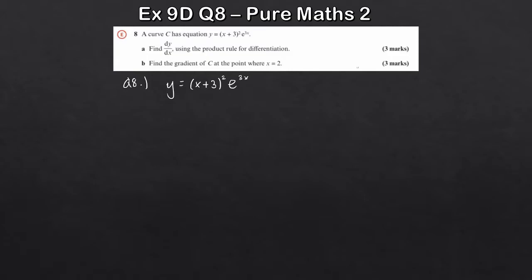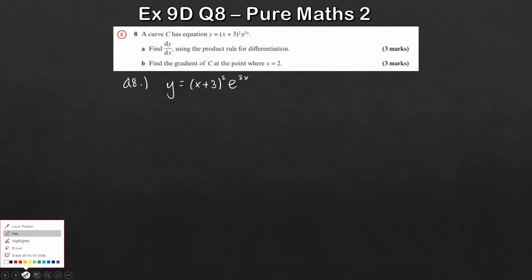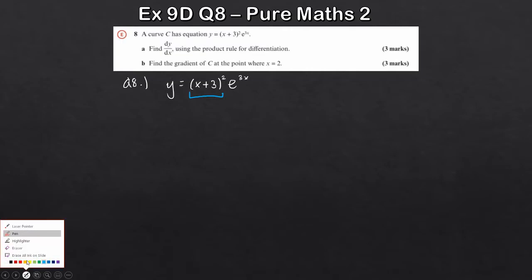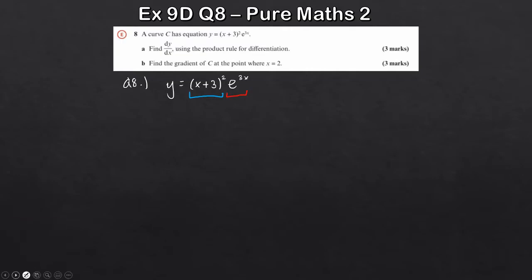We split it up into two unique functions. The first function, picked out in blue, is x plus 3 squared. The other function is e to the 3x.